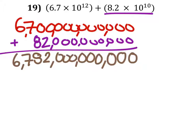So, this is our standard form number, but in this problem it wants it in scientific notation. So I'm going to put the decimal after the 6, which is the first non-zero number farthest to the left.